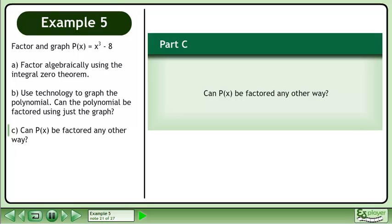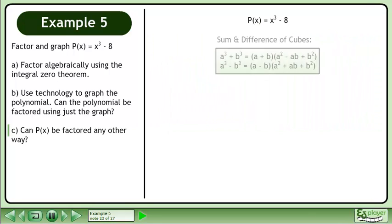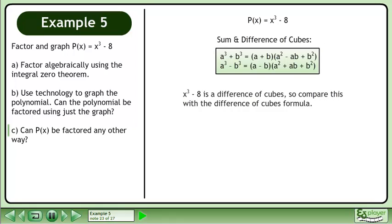In Part C, can P(x) be factored any other way? The following formulas can be used to find the sum and difference of cubes. x³ - 8 is the difference of cubes, so compare this with the difference of cubes formula.